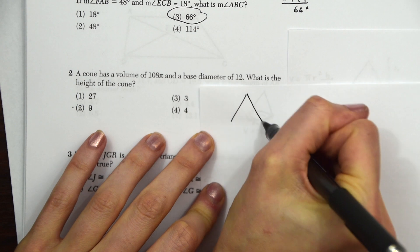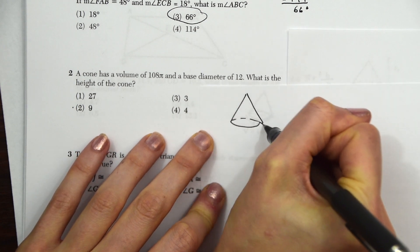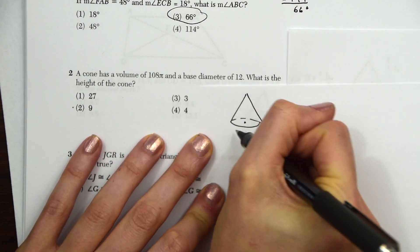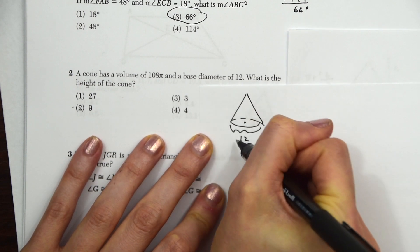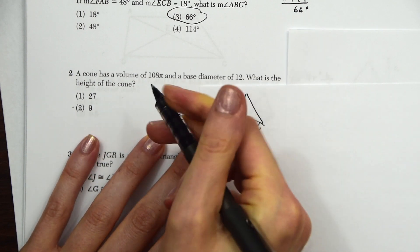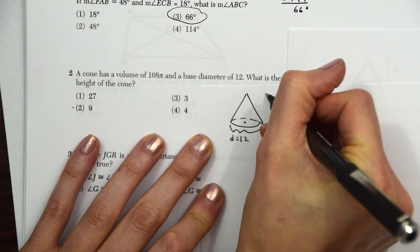Draw out this cone. So what does this look like? We have a base diameter of 12, so that's just everything down here, this entire length. So D equals 12. And the height of the cone, this is what we need to find.